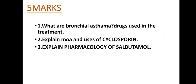Five-mark questions: What are the drugs used in the treatment of bronchial asthma? Drugs such as salbutamol, terbutaline, levosalbutamol, ipratropium bromide — different types of bronchial asthma drugs are used. Also: mechanism of action and uses of cyclosporine, and explain the pharmacology of salbutamol.